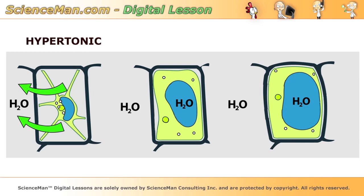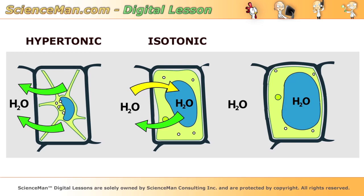Now if we place a cell in a solution where the concentration of particles is similar to the concentration of particles inside the cell — otherwise known as isotonic — then the movement of water inside and outside the cell will be relatively equal. This results in a cell that's neither shrunken nor swollen.